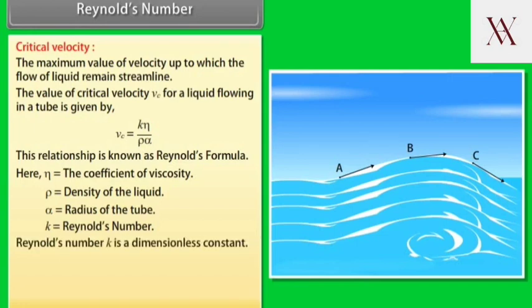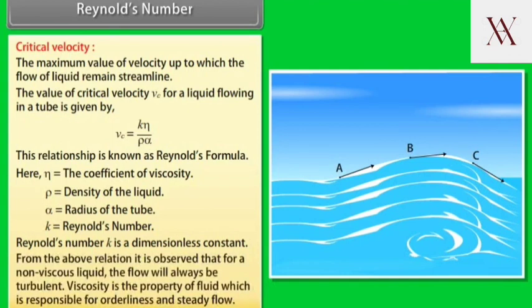Reynolds number k is a dimensionless constant. From the above relation it is observed that for a non-viscous liquid the flow will always be turbulent. Viscosity is the property of fluid which is responsible for orderliness and steady flow.